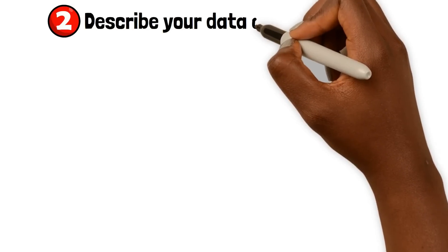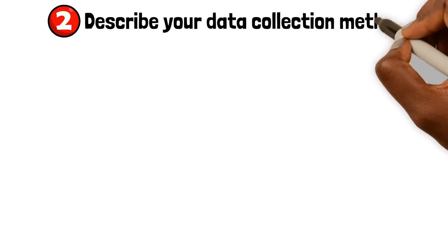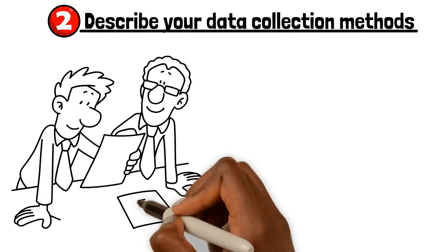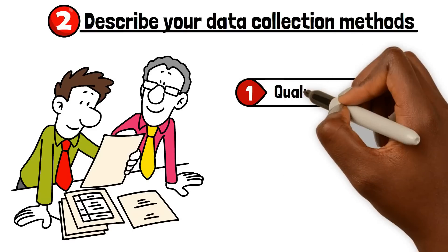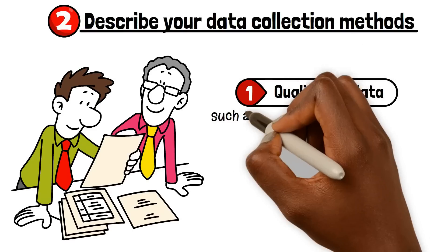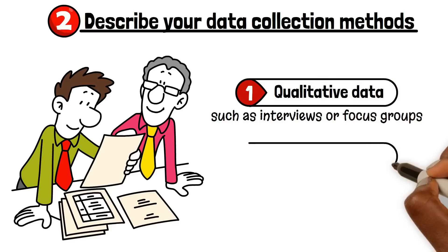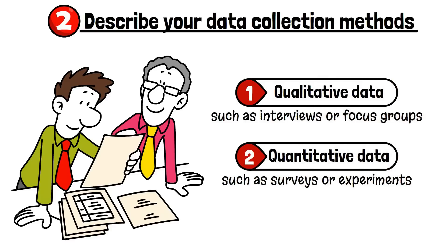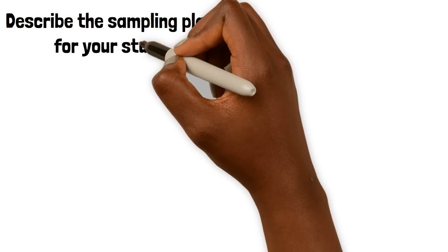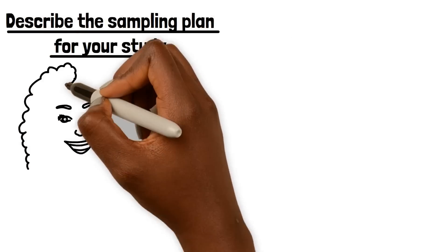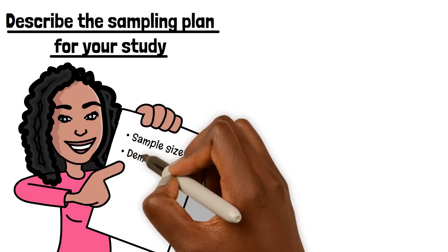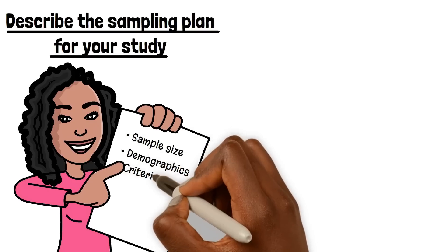Step 2: Describe your data collection methods. First, you want to specify the type of data you'll be collecting. This could be qualitative data, such as interviews or focus groups, or quantitative data, such as surveys or experiments. Next, describe the sampling plan for your study. This should include information on the sample size and demographics, as well as the criteria used to select participants.